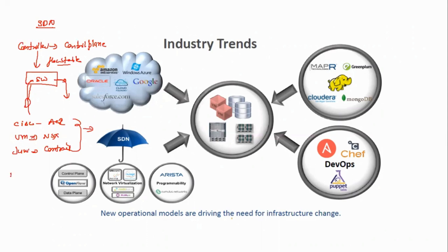If you talk about open standard SDN solutions, there are solutions like ODL and ONOS. These are open standards which can be integrated with any switch that supports OpenFlow. OpenFlow is a protocol which a controller uses to send its flow table to southbound switches. Any switch supporting OpenFlow can be integrated with ODL and ONOS.